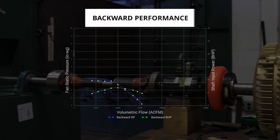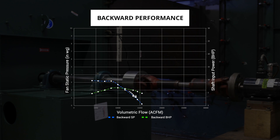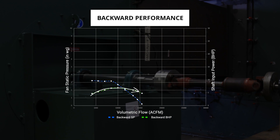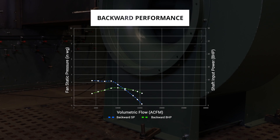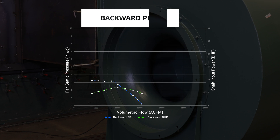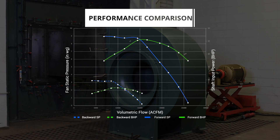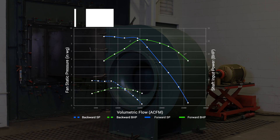Now let's see what happens when we run the fan backwards and take similar measurements. Once we have both curves established we can compare them and see that the fan operating in reverse has a reduction in flow, pressure, and power.